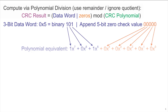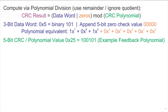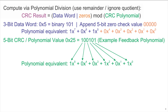We'll use a 5-bit CRC with polynomial value hexadecimal 25, binary 100101. Other polynomials could be used, but that's the one we'll use for the example. Those binary digits correspond to the coefficients of a polynomial: 1·x to the 5th plus 1·x squared plus 1·x to the 0, with the other terms being 0.